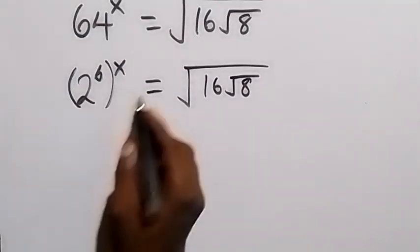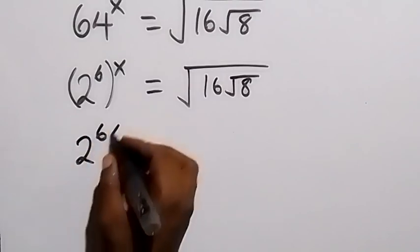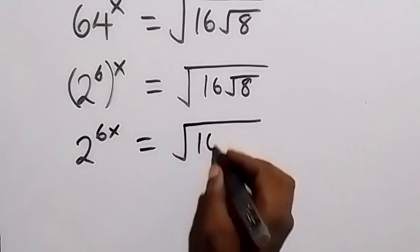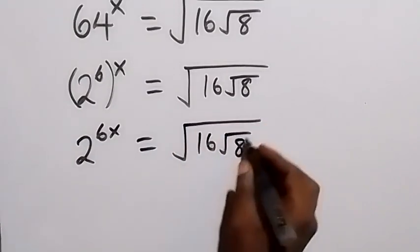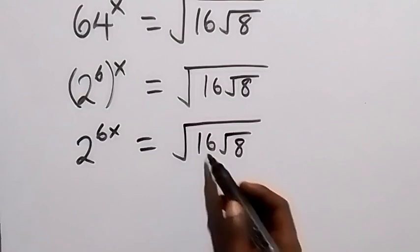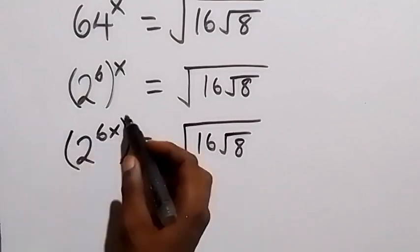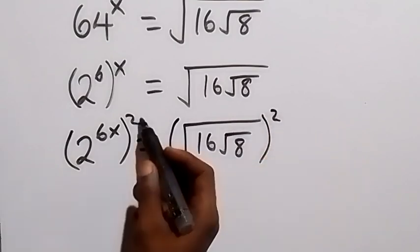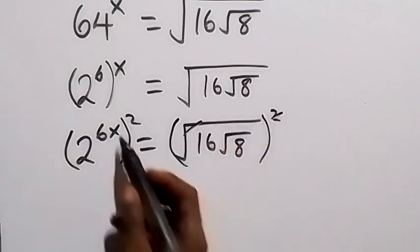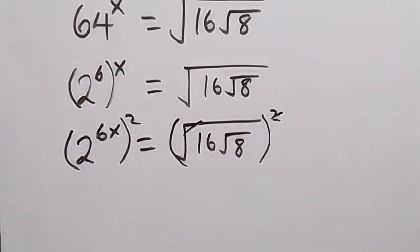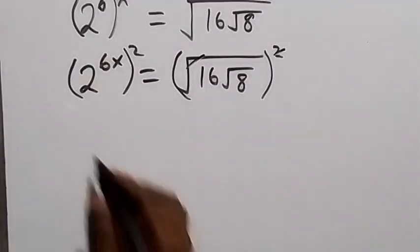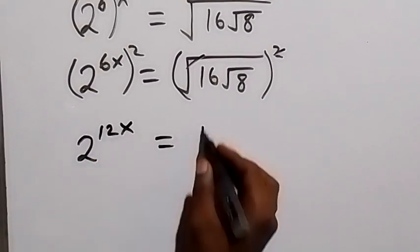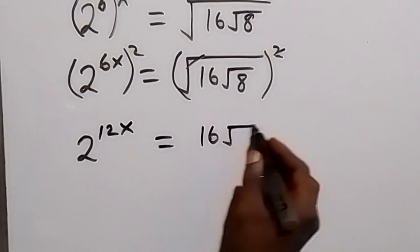We multiply the powers, so this becomes 2 raised to power 6x, which equals the square root of 16 then root 8. Now let's remove the square root on this side by squaring both sides. We square this side and also square this side — the square cancels the square root — and the power multiplies, giving us 2 raised to power 12x equals 16 root 8.